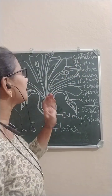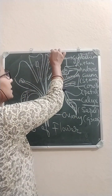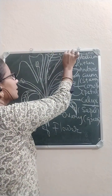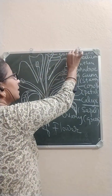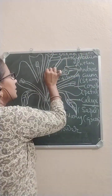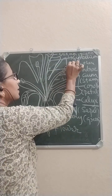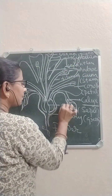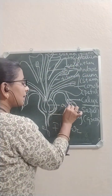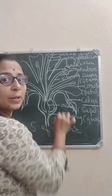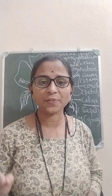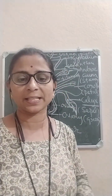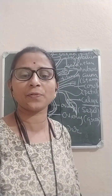Pistil has three parts: stigma, style, and ovary. Stigma, style, and ovary are the three parts of a pistil, which is the essential part of a flower.